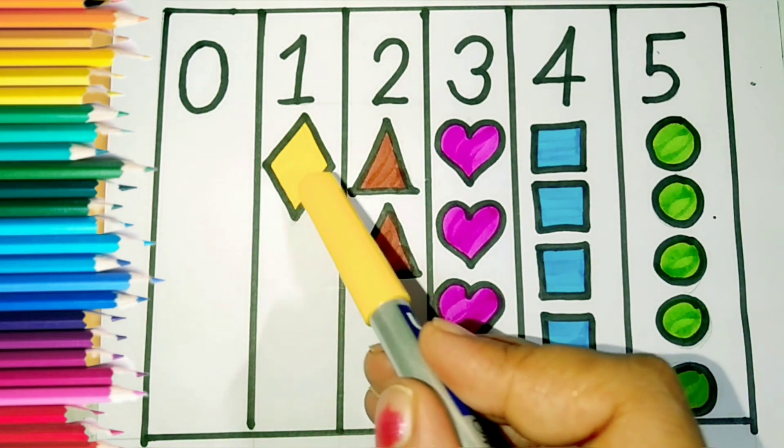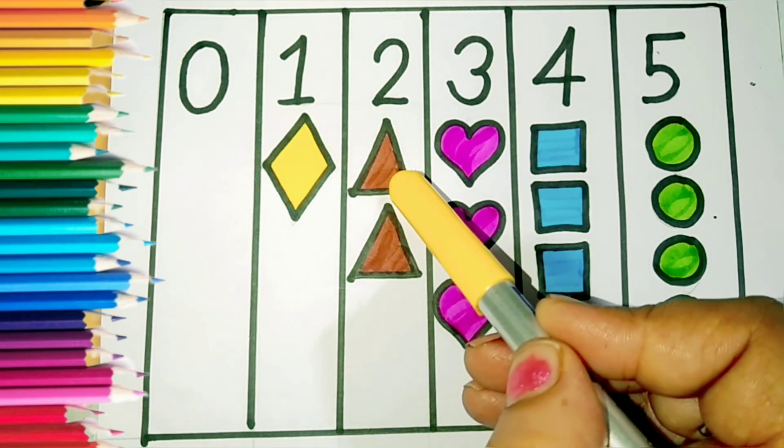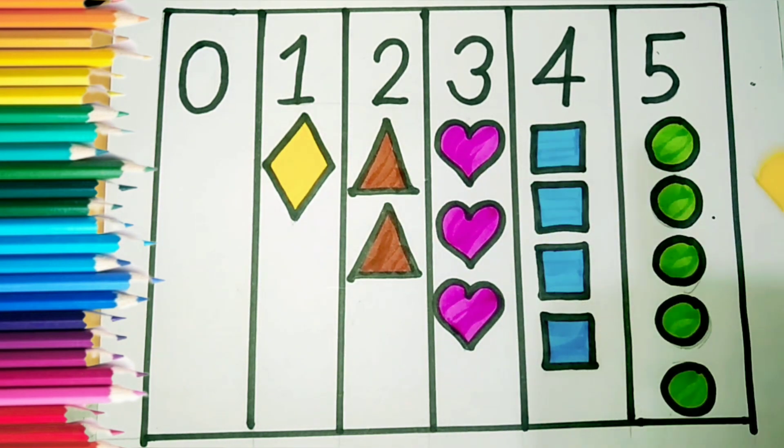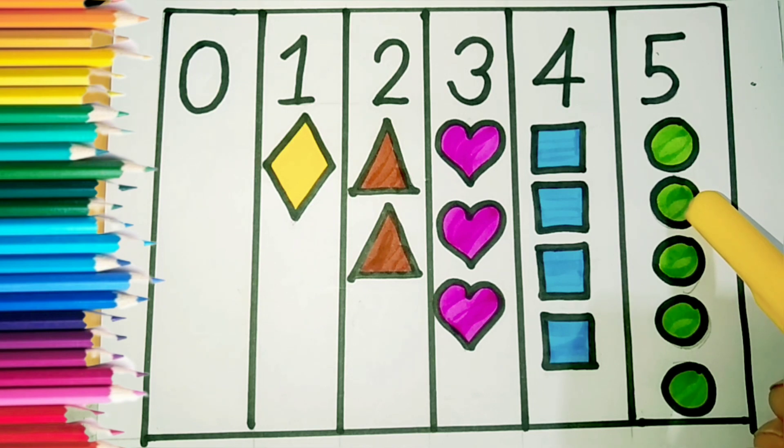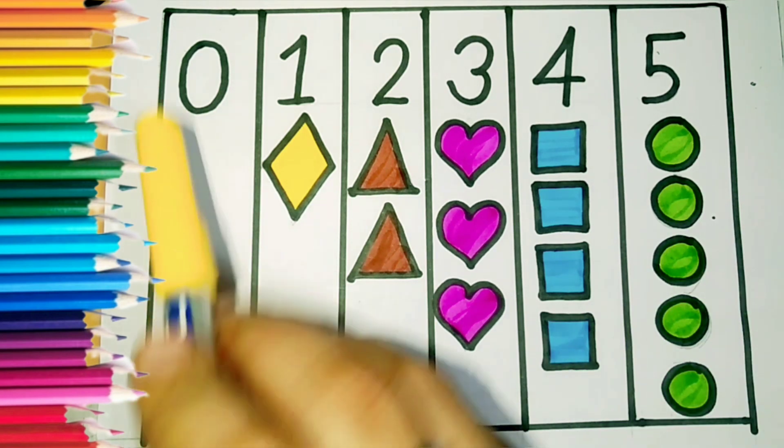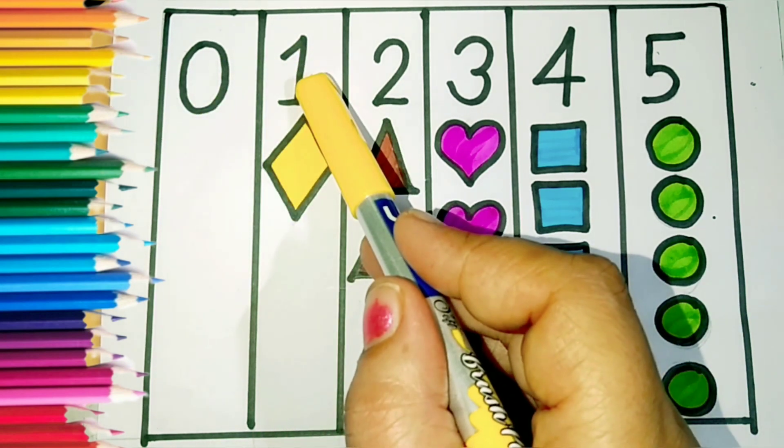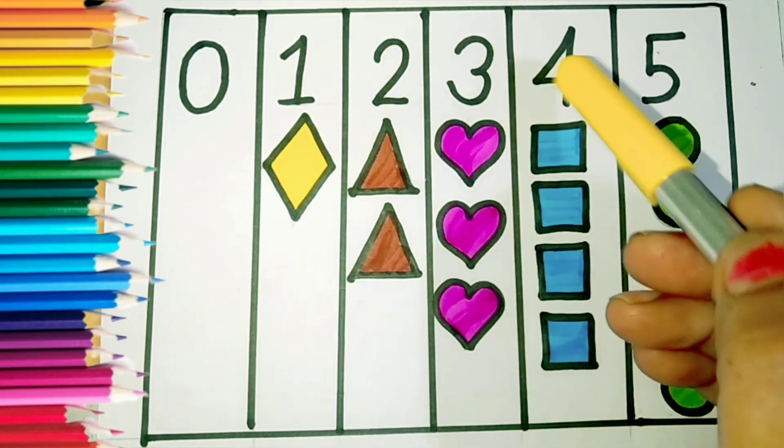Read with me: yellow, brown, pink, sky blue, leaf green, light green, leaf green. And now repeat the numbers: zero, one, two, two, three.